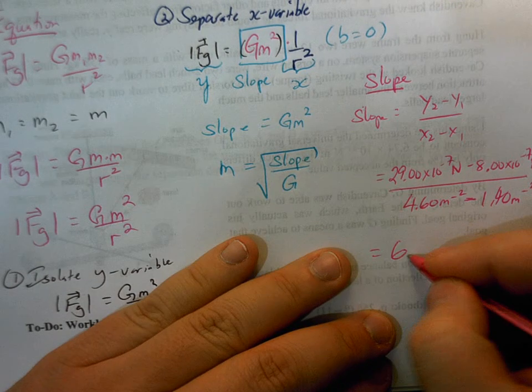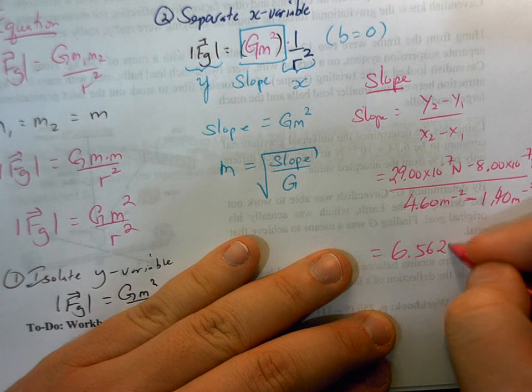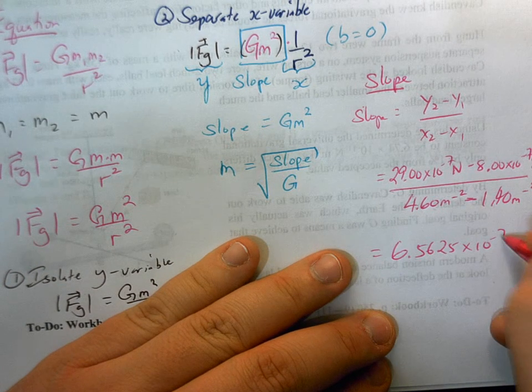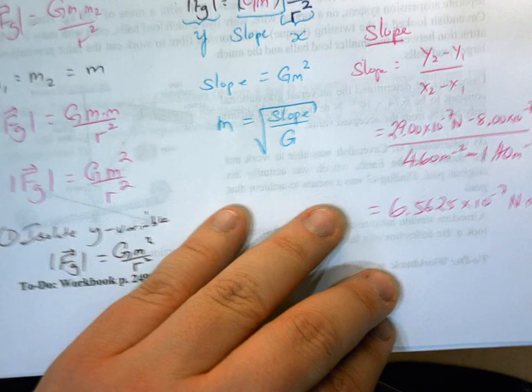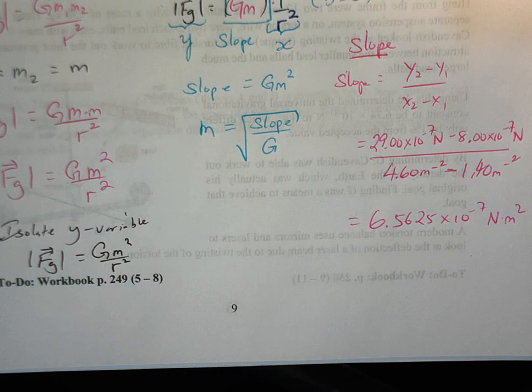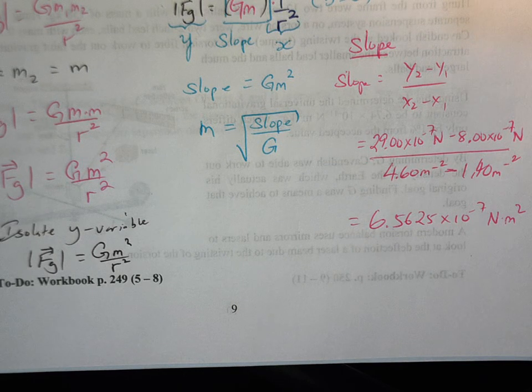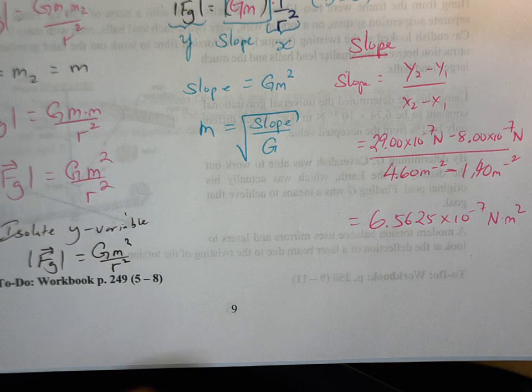So let's see what we're going to get for this slope. So for my slope, and you may get something a little bit different, I'm getting about this 6.5625 times 10 to the minus 7 newton meters squared.